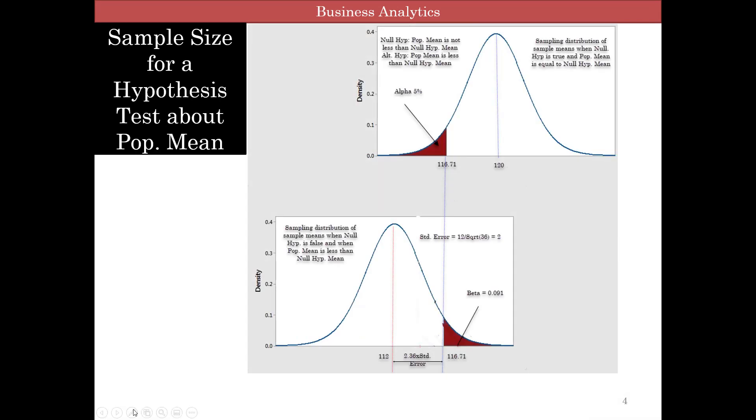Here is the sampling distribution of sample means when the null hypothesis is true, and the population mean equals the null hypothesis. The x-axis is sample means. We're looking at a lower tail test, so alpha is 5%, and the critical value is 116.71.